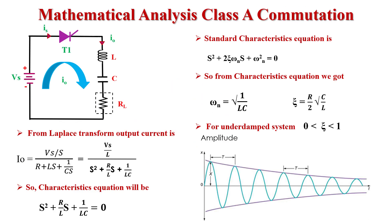Now the mathematical analysis of Class A commutation. When T1 is turned on it behaves like a short circuit and output current flows. Applying Laplace transform to the output current, we get I0 equals Vs/S divided by (R + Ls + 1/Cs). To convert this to a second-order characteristic equation, we multiply by S/L in numerator and denominator, giving Vs/L divided by (S² + R/L·S + 1/LC).